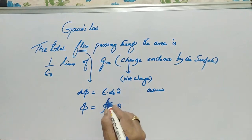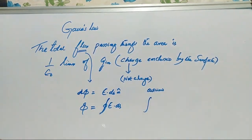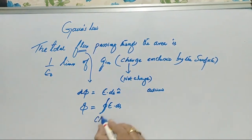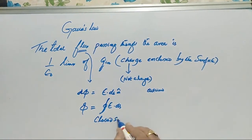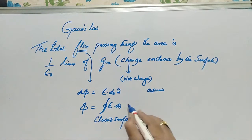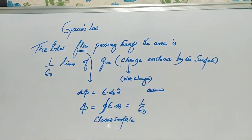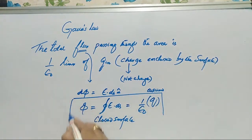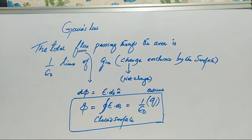The circle on the integral sign is a new symbol — it means surface integral or closed integral. So Gauss's law is applicable for closed surfaces. The total flux φ, which equals the closed surface integral of E·dS, is in turn equal to 1/ε₀ times the charge enclosed by the surface. This is the simple mathematical form of Gauss's law. It has great importance in electrostatics. The flux φ passing through the surface equals (1/ε₀)Q_in, where Q_in represents the net charge enclosed by the surface.